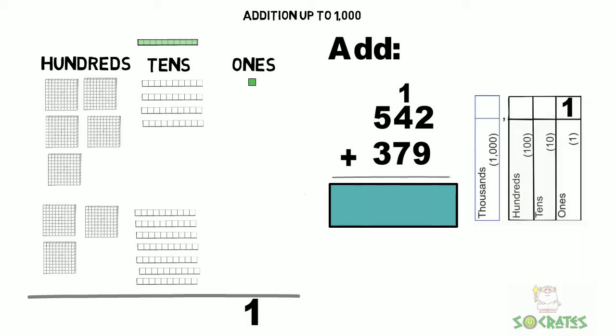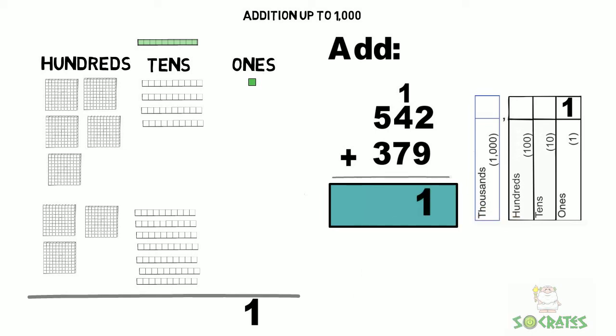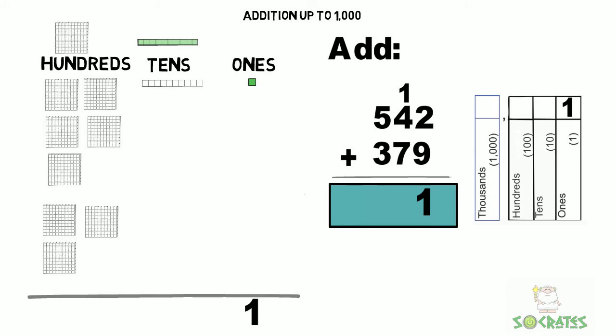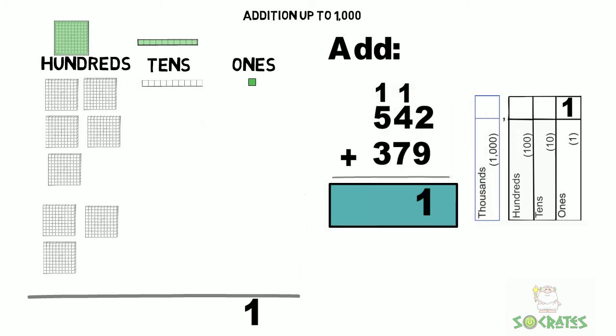Now let's add our tens. We have more than 10 tens - we have 12 tens total, which really means 120. We're going to put a 1 above the hundreds place and have 2 tens left over.